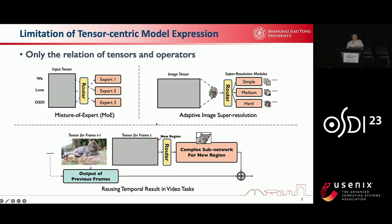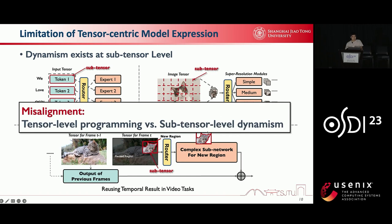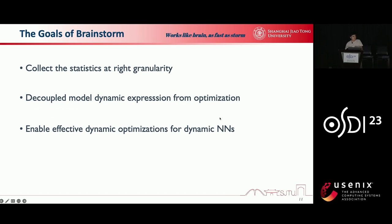Tensor-level programming in existing frameworks only expresses the relation of tensors and operators. For example, frameworks treat the whole sequence, the whole image, as a single tensor. However, the dynamism of dynamic models often exists at the subtensor level. There is a misalignment between tensor-level programming and subtensor-level dynamism. Therefore, we propose Brainstorm to mitigate these gaps.